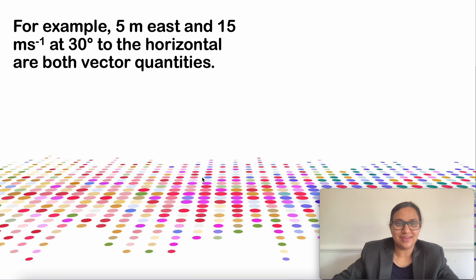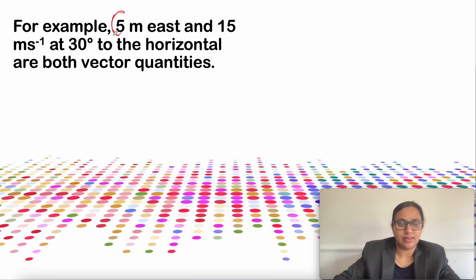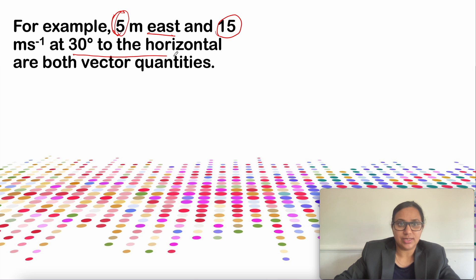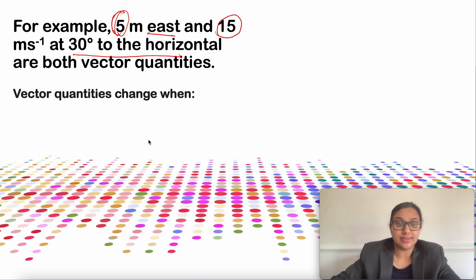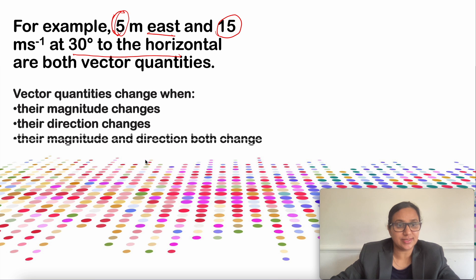Vector quantities are fully described by both a magnitude and a direction. For example, '5 meter east' and '15 meter per second at 30 degrees to the horizontal' are both vector quantities. The magnitudes are 5 meter and 15 meter per second, and the directions are east and 30 degrees to the horizontal. Vector quantities change when their magnitude changes, their direction changes, or both their magnitude and direction change.